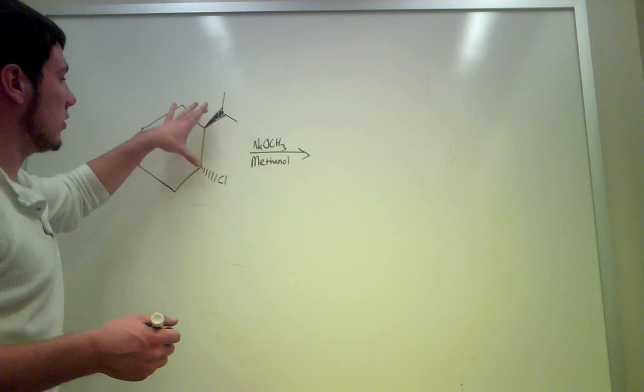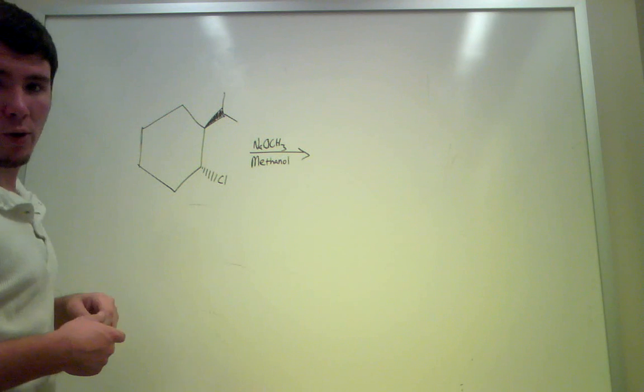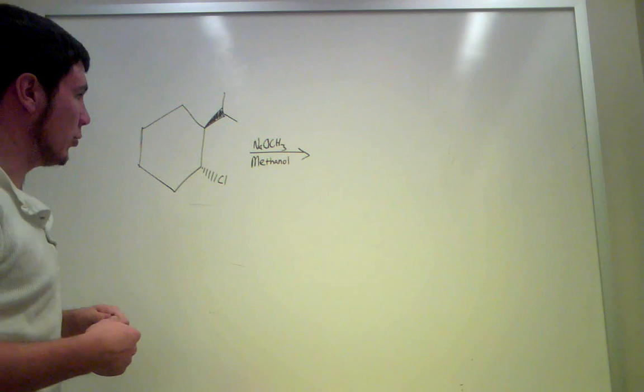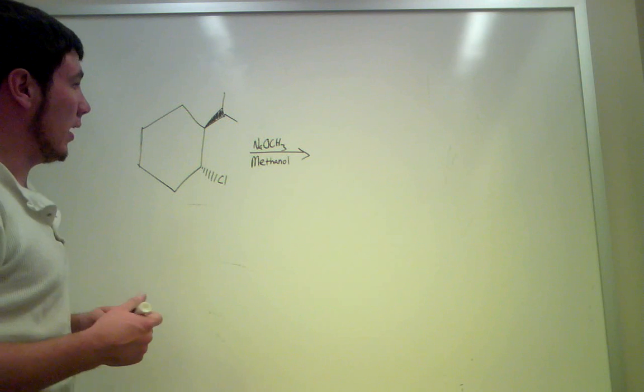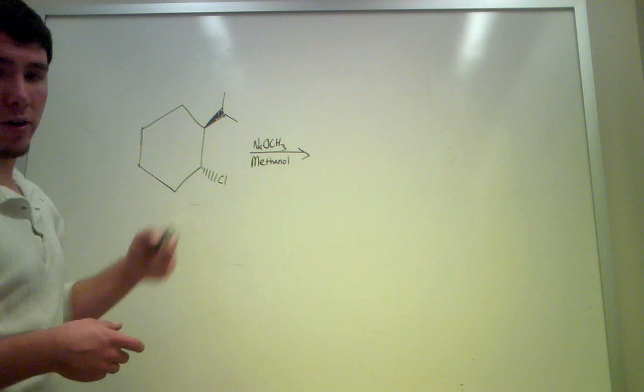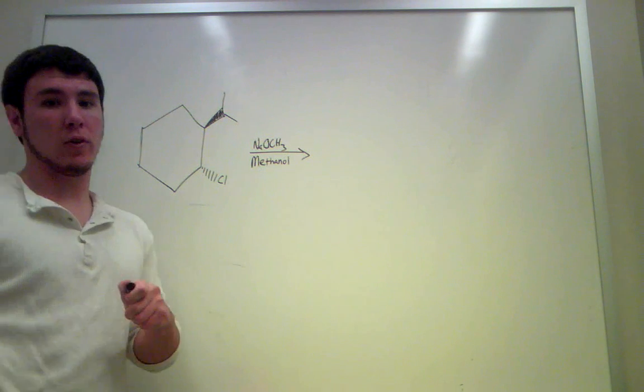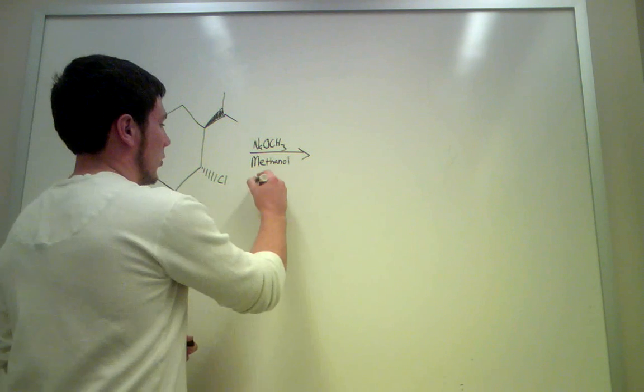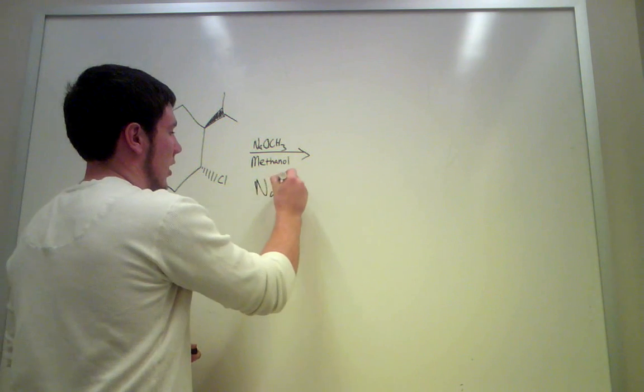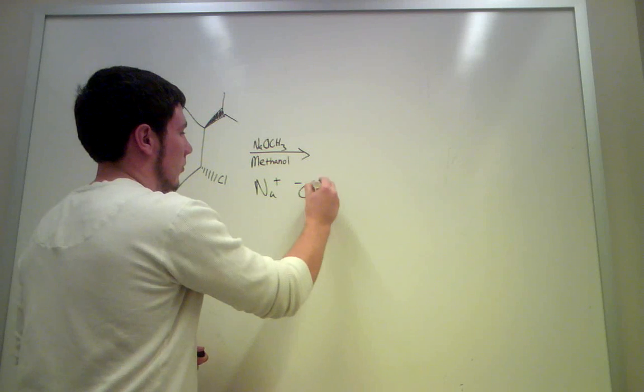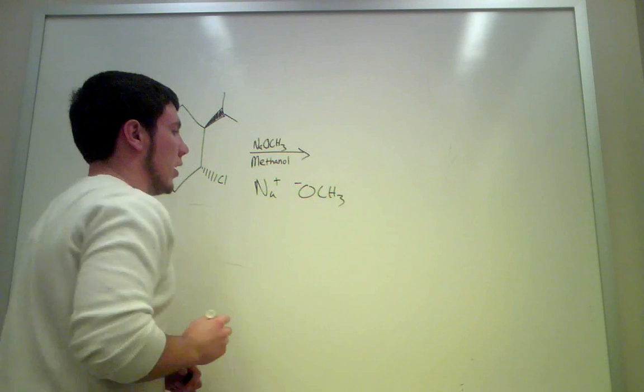We've got this ring here. Looks like it's got two substituents. One of them is a halogen, which we're going to be looking to remove with this reaction. We've got our base here, and looking at it, if you've seen one of my previous videos, you'll know exactly what I'm going to say. This is an Na+ with a negative OCH3.